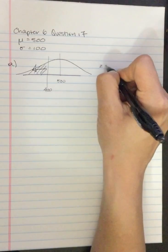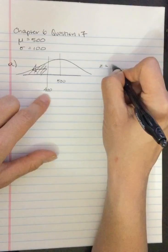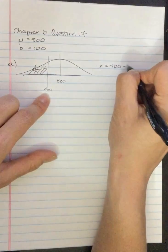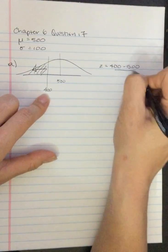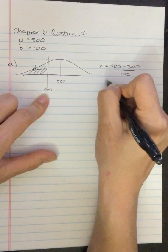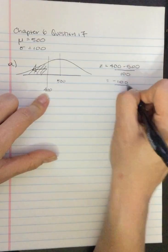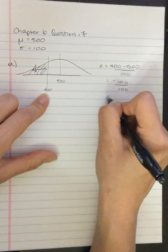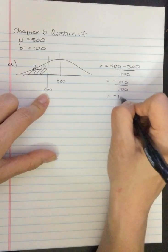So the z-score is equal to 400 subtract 500 divided by 100. So that's equal to negative 100 divided by 100, which is equal to negative 1.00.